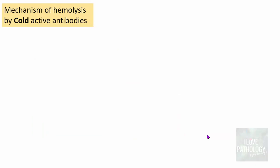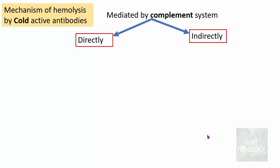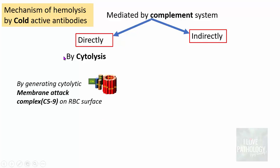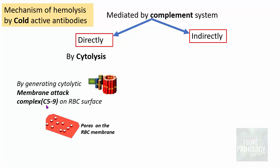Moving on to the mechanism of hemolysis by cold active antibodies — this is mediated by the complement system, either directly or indirectly. The direct mechanism involves generating the cytolytic membrane attack complex. C5 to C9 is referred to as the membrane attack complex, and once it attaches to the RBC surface, multiple pores form on the RBC membrane, leading to cytolysis.